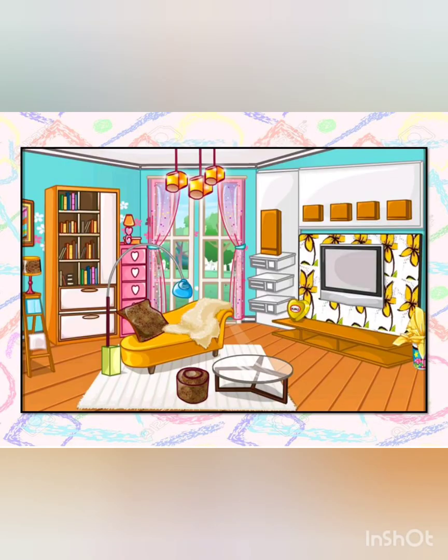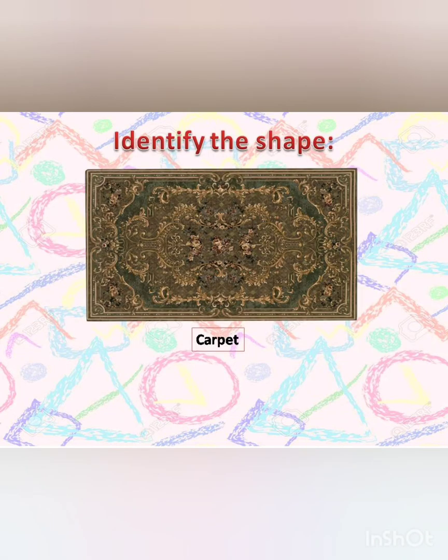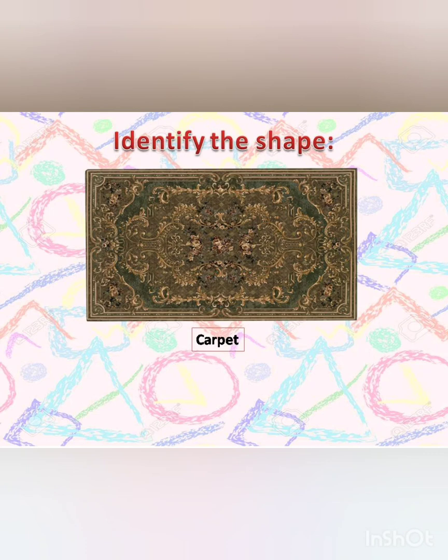Look around — you can find many objects and classify them according to their shapes. Now, I will give you some examples and you have to identify the shape. My first example is carpet. Can you identify the shape of this carpet? The answer is rectangle.